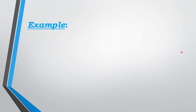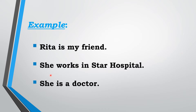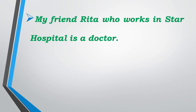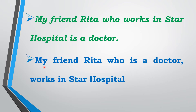Look at the next example: Rita is my friend. She works in Star Hospital and she is a doctor. When I ask you to join all these sentences together, how will you do it? Exactly — 'My friend Rita, who works in Star Hospital, is a doctor.' Otherwise we can join the sentences like: 'My friend Rita, who is a doctor, works in Star Hospital.'